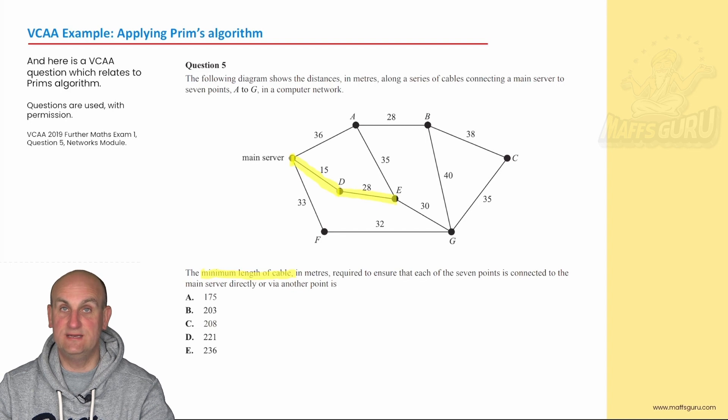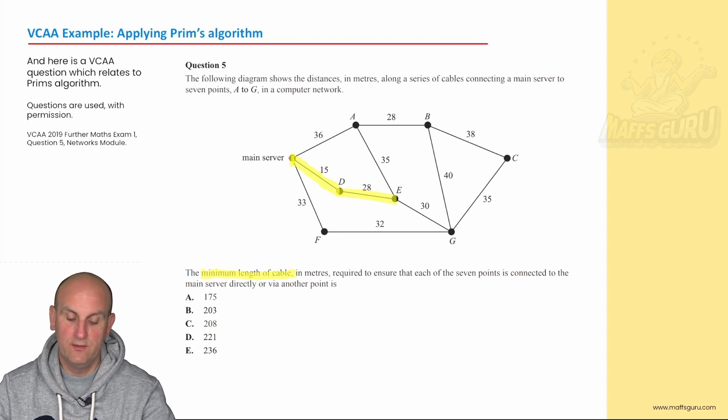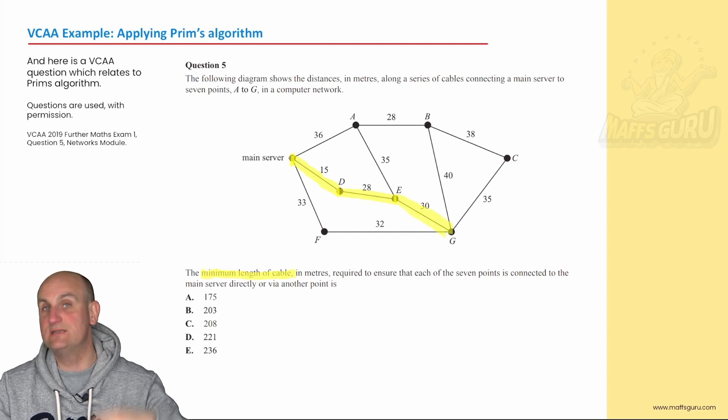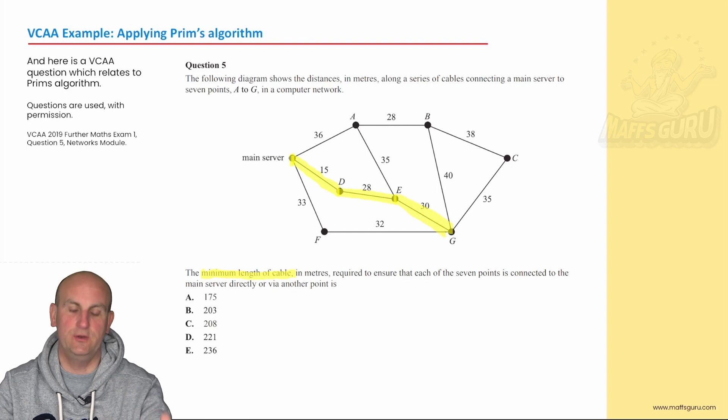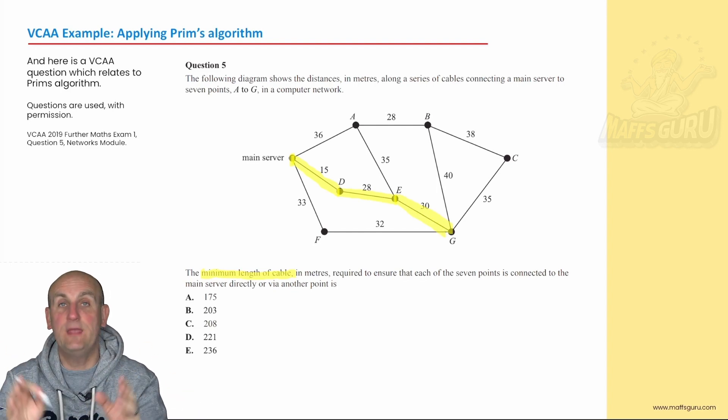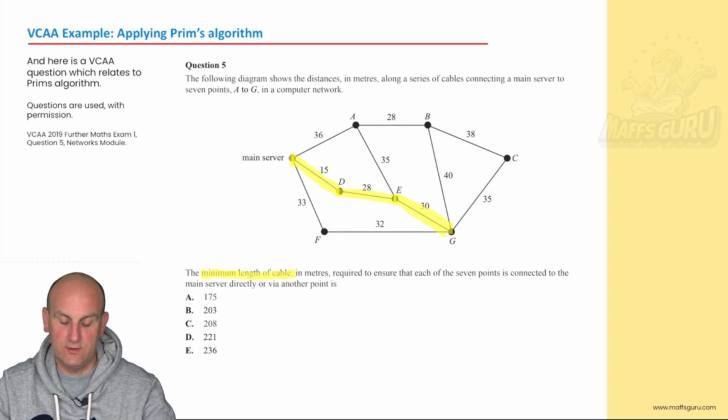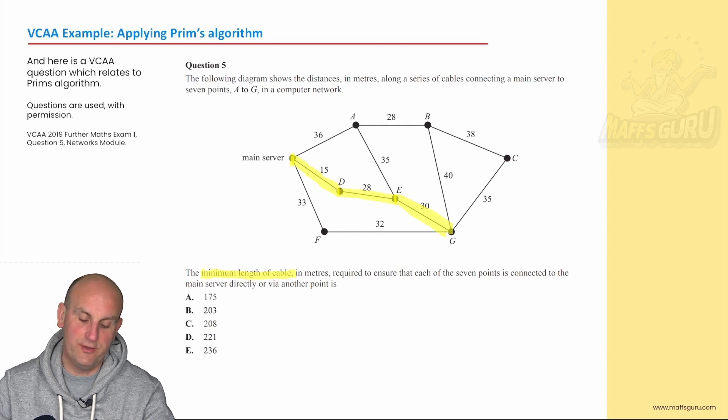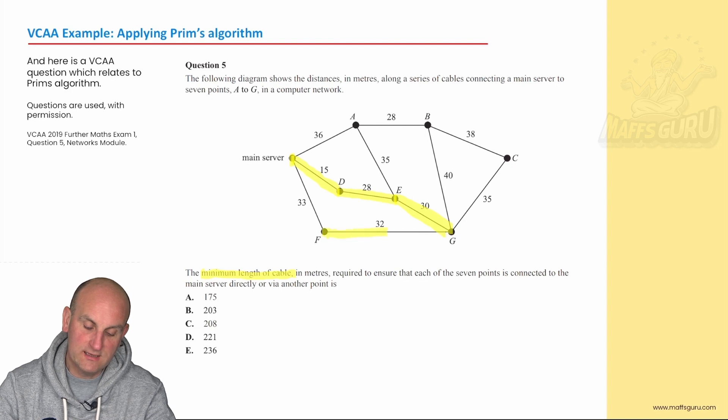So now I've got main server, D and E connected. I'm looking for the smallest one that comes off of all of those. So what choices do I have? A 36 coming off there, a 35, a 30, or a 33? Well, 30, as far as I'm concerned, seems to be the smallest value. There we go. That's my next line. And I just keep going. Every time I join a new point, I'm looking at what comes off of those and the old ones to see what's next. What have we got here? We've got a 36, a 35, a 40, a 35, a 33, and a 32. Well, there we go. I think that's my 32.